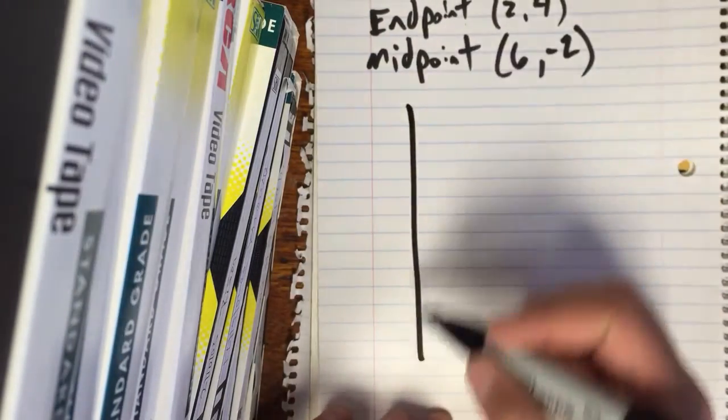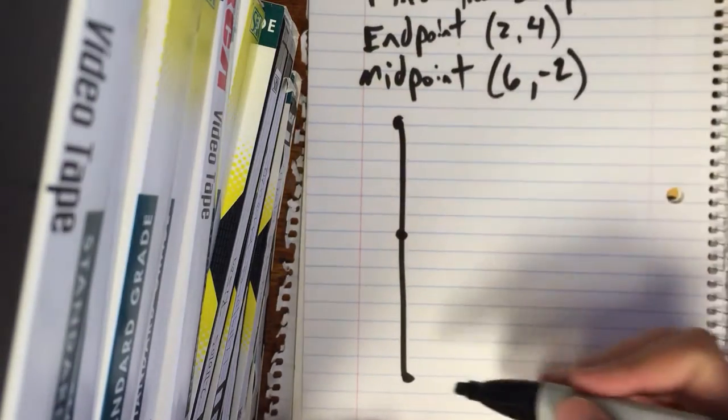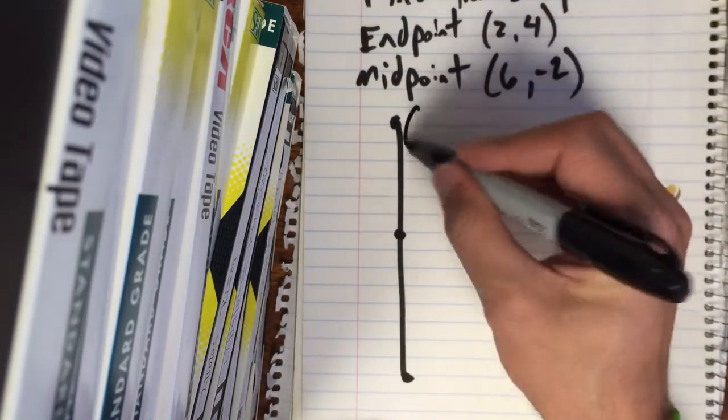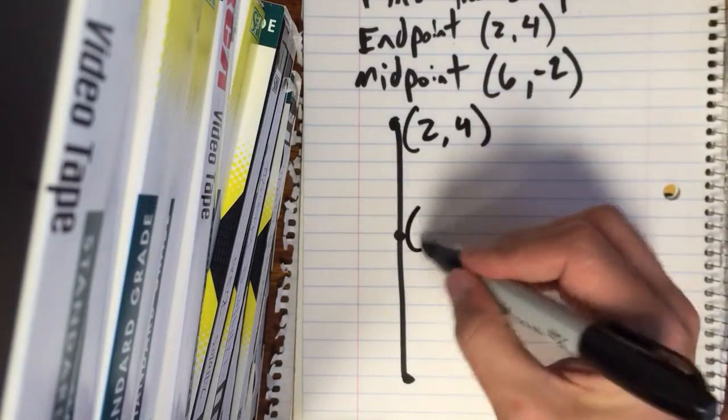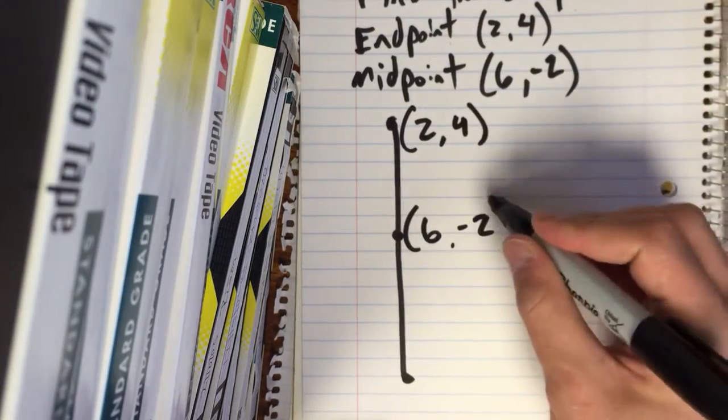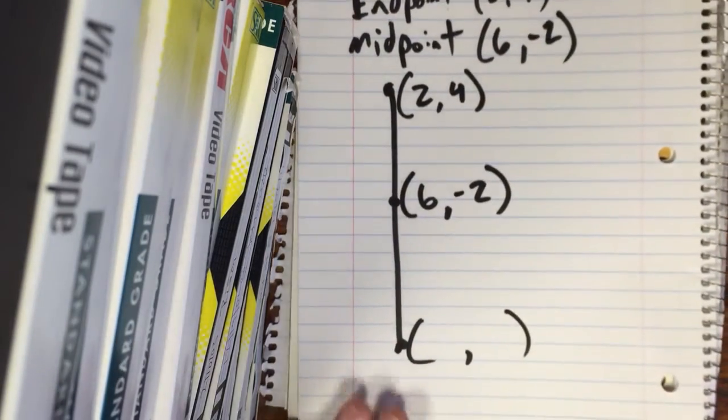So what we're talking about is a line, correct? We've got an endpoint, an endpoint, and a midpoint. Which ones do we know? We know an endpoint is at (2, 4) and we know the midpoint is at (6, -2).